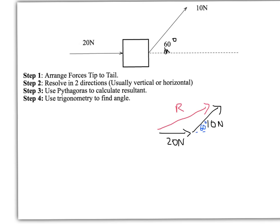Step two is resolve in two directions. We're going to do the resultant in the horizontal direction and the resultant in the vertical direction. In the horizontal direction, where the dotted line is above, we've got 20N from one of the forces there, and we also have part of the other force. So we have 10 multiplied by the cosine of 60 to find the component of the 10N force in the horizontal direction.